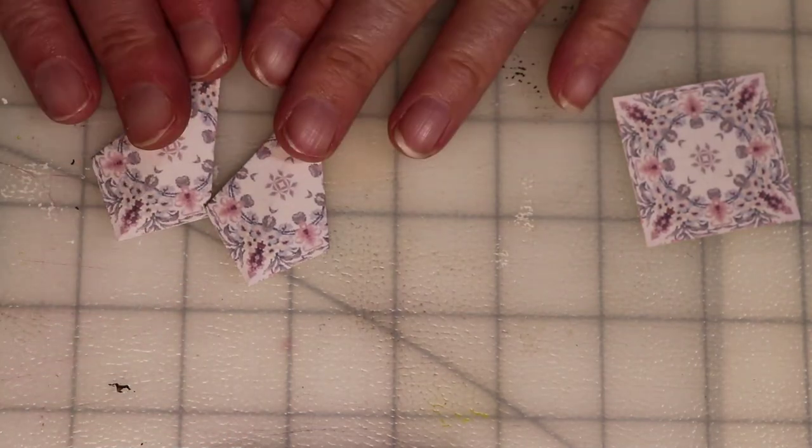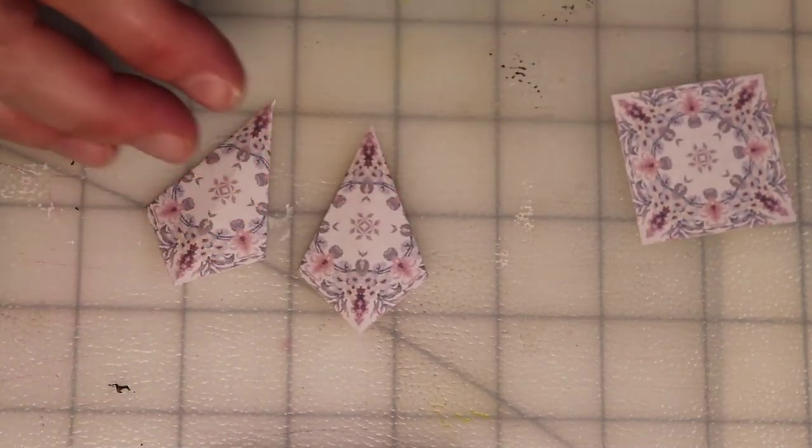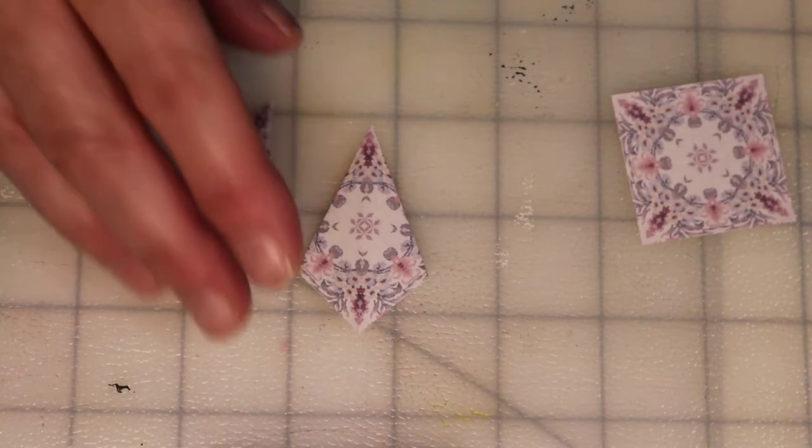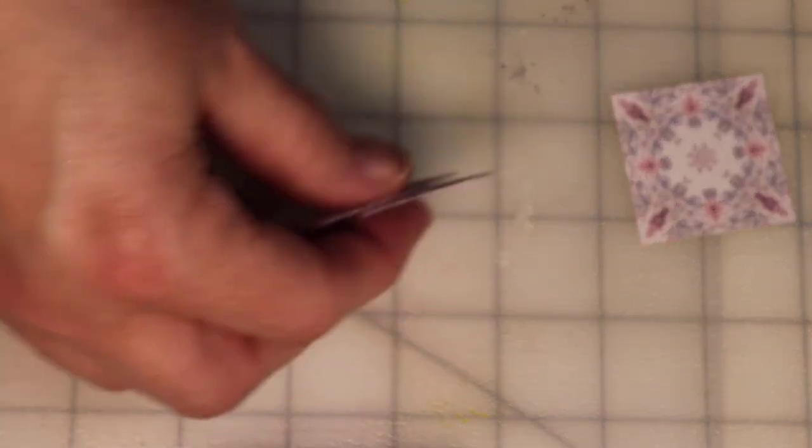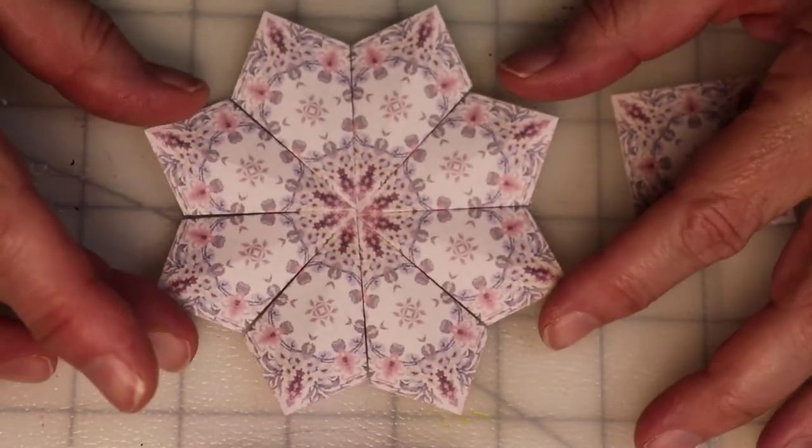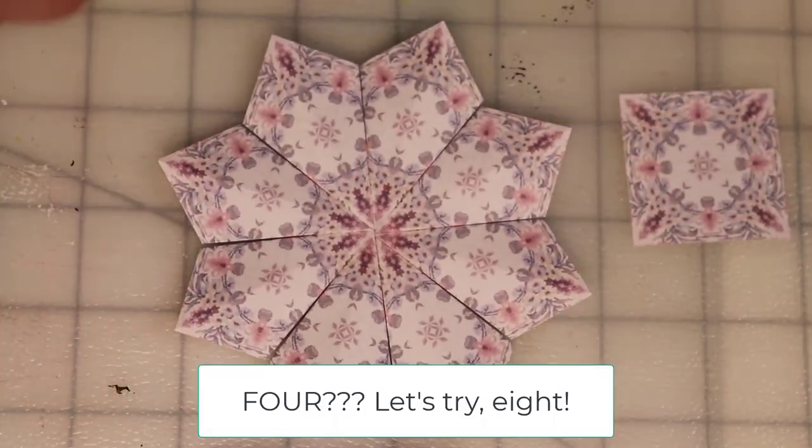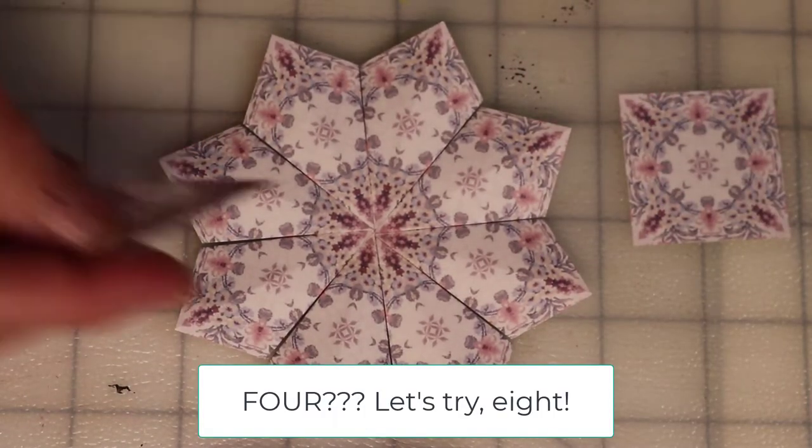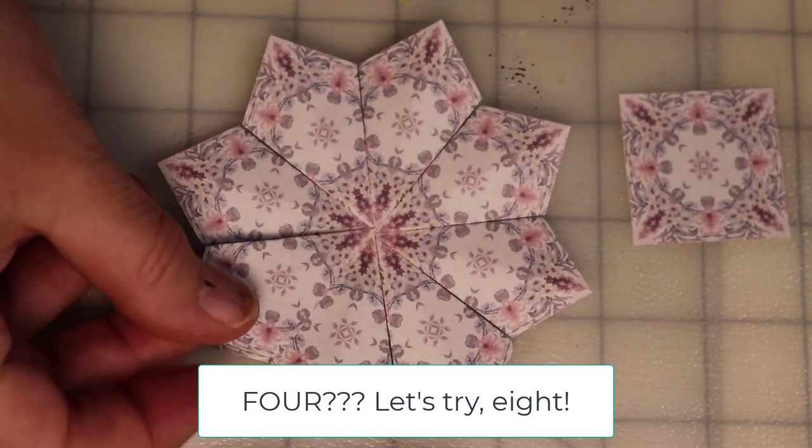Now when you get a whole bunch of these folded, you can put them together. And here is a medallion that I've made with four of these. And these are with the skinny side facing in.